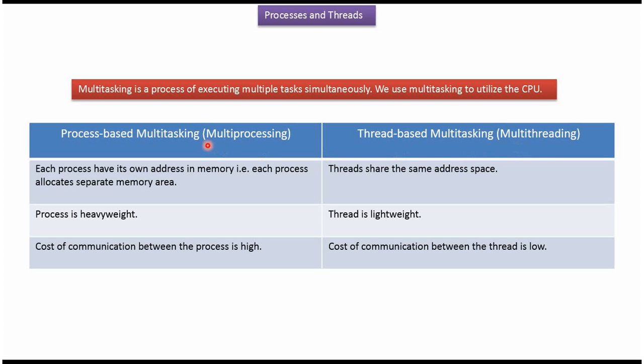We will see the difference between process-based multitasking and thread-based multitasking. Each process has its own address in memory, meaning each process allocates a separate memory area. Threads share the common address space. Process is heavyweight and thread is lightweight. Cost of communication between processes is high. Cost of communication between threads is low.